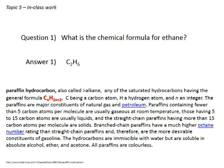Welcome to topic five, in-class work, question number one: what is the chemical formula for ethane? The answer is C₂H₆. Ethane is a paraffin hydrocarbon, also called an alkane. Alkanes are saturated hydrocarbons having the general formula CₙH₂ₙ₊₂, where C is a carbon atom, H is a hydrogen atom, and n is an integer.